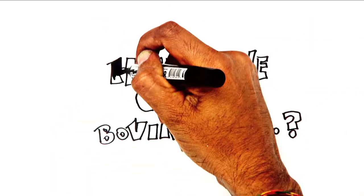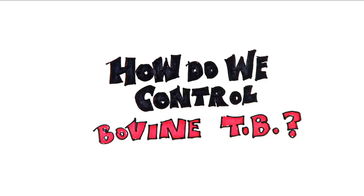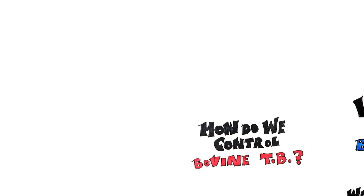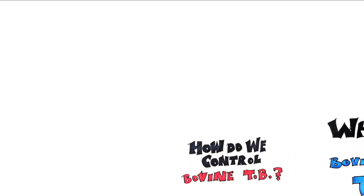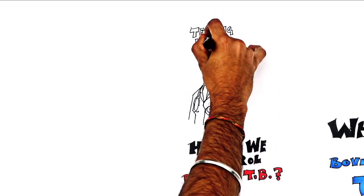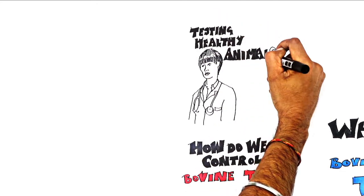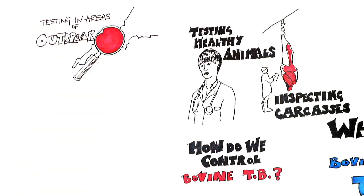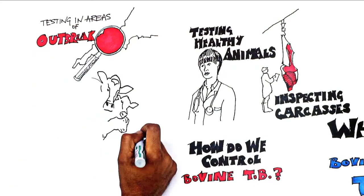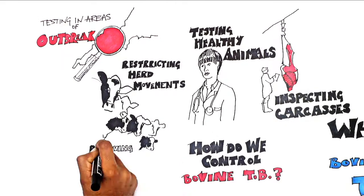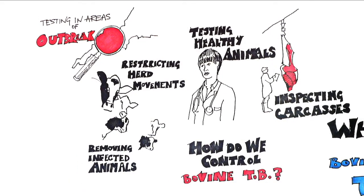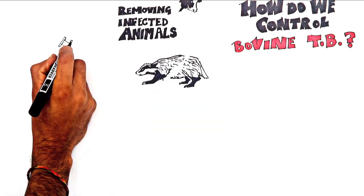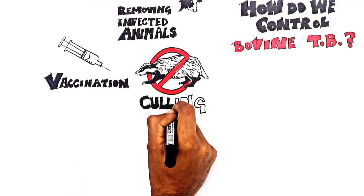How do we control bovine TB? There is currently a comprehensive set of measures applied to control bovine TB, including looking for bovine TB by routinely testing healthy animals and inspecting carcasses at the abattoir; testing in areas of bovine TB outbreak; restricting herd movements and removing infected animals. We are also starting to tackle infection in badgers, including vaccination and culling.